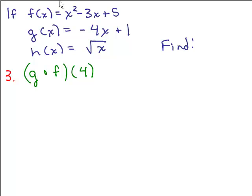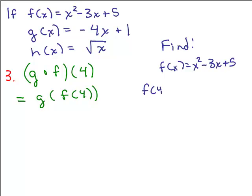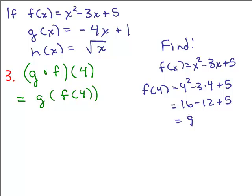Let's use these same three functions and compute g of f of 4. This means g of f of 4, so we need to figure out f of 4. Since f of x is x squared minus 3x plus 5, f of 4 would be 4 squared minus 3 times 4 plus 5. That's 16 minus 12 plus 5: 16 minus 12 is 4, plus 5 gives us 9. So we'll plug in 9 for f of 4.